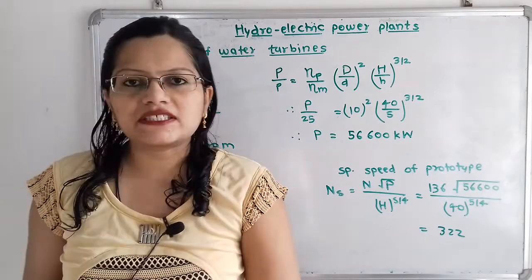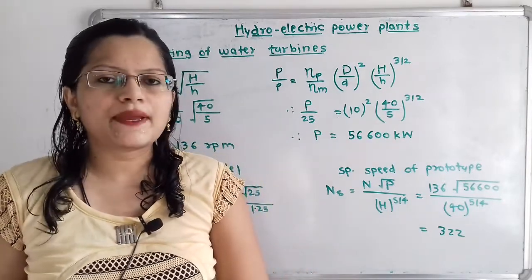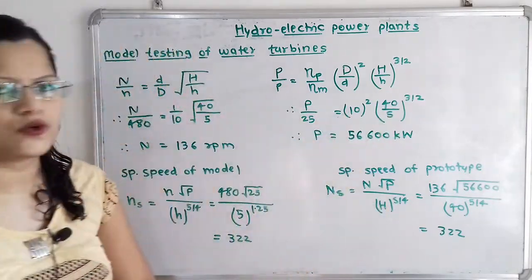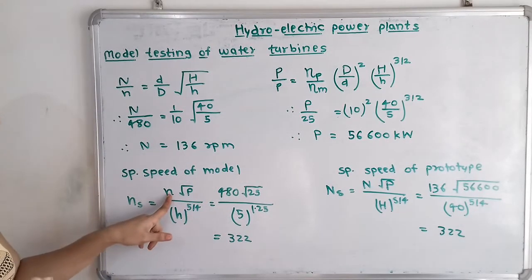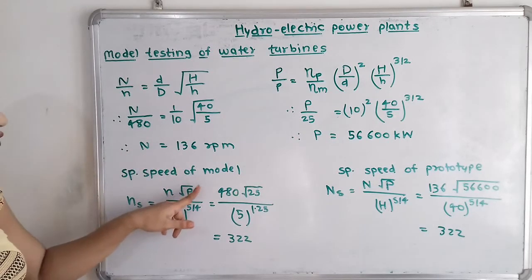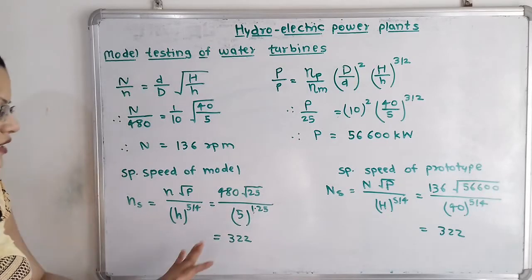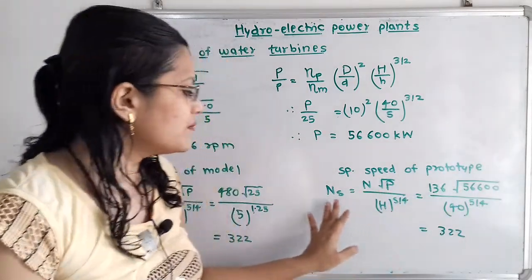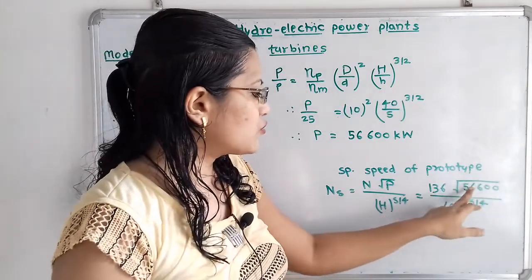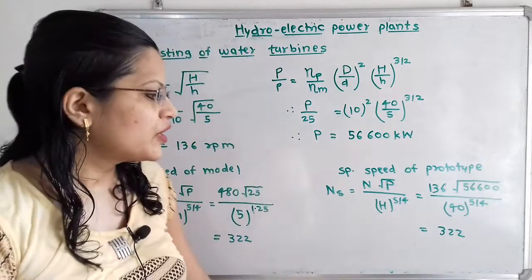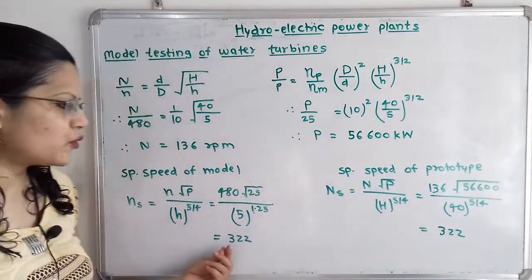Now we will calculate the specific speed of the model as well as the prototype. The specific speed should be the same because the model is geometrically similar to the prototype. Specific speed formula: n times square root of p divided by h raised to 5/4. For model: 480 times square root of 25, divided by 5 raised to 5/4, equals 322. For prototype: 136 times square root of 56600, divided by 40 raised to 5/4, also equals 322. So the specific speeds of model and prototype are the same, which verifies our answer.